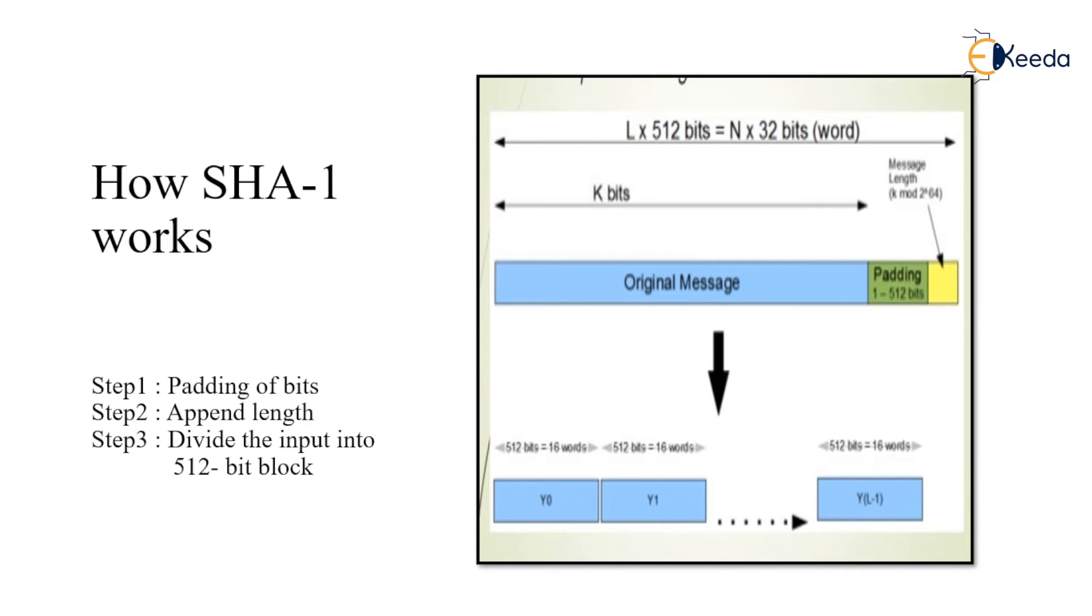Step 2 is append the length. The original message is padded with the bits 1 to 512 bits. This yellow block shows the message length, which is K mod 2 to the power of 64.